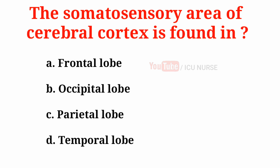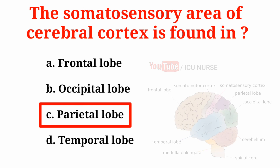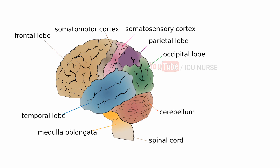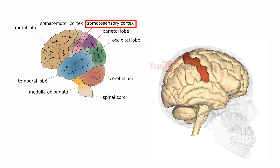The somatosensory area of the cerebral cortex is found in: A. Frontal lobe, B. Occipital lobe, C. Parietal lobe, D. Temporal lobe. The correct answer is C. Parietal lobe. The primary somatosensory cortex is located in a ridge of cortex called the postcentral gyrus, which is found in the parietal lobe.